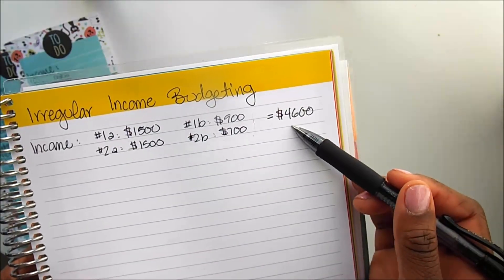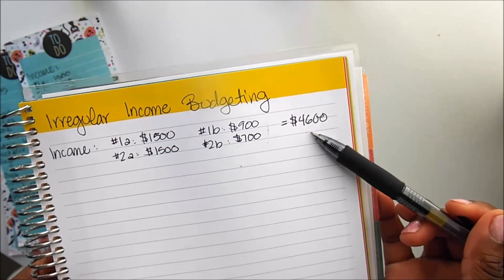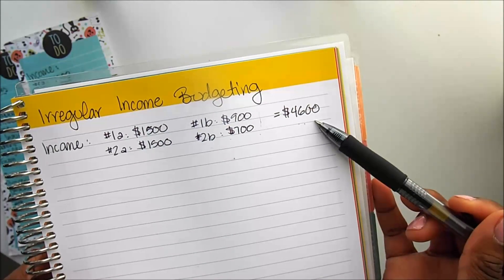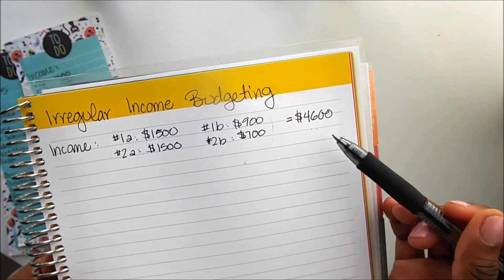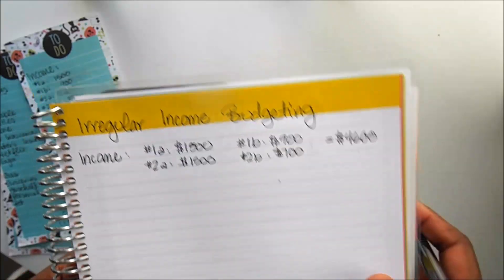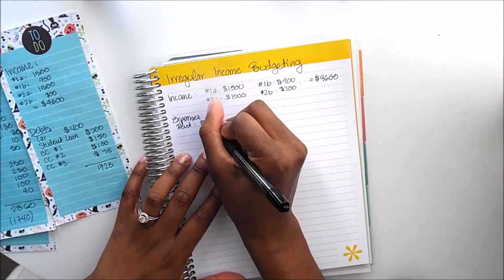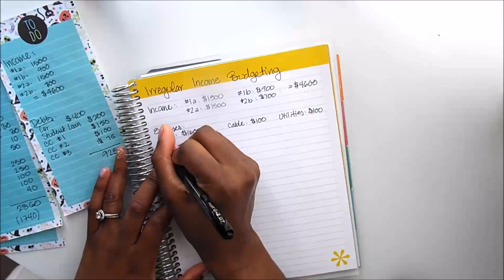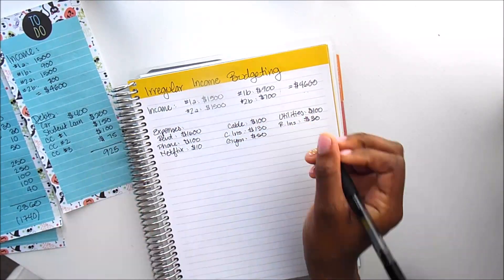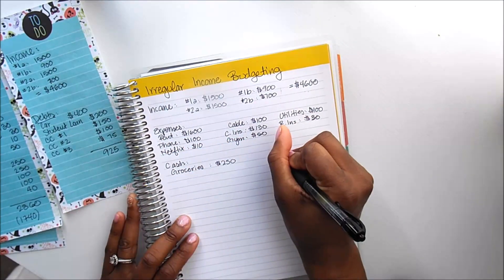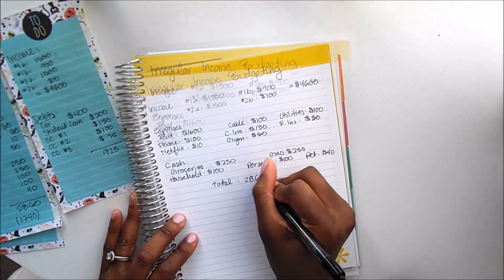Now with this, we need to make sure that our expenses are taken care of, that anything we need for cash will be taken care of, and that any of our payments would be set and taken care of within this total here. And then for anything extra that we have left over, that's when we would separate it out and allocate it towards sinking funds or extra snowflake payments, etc. So for our expenses, I'm going to go ahead and write those out.